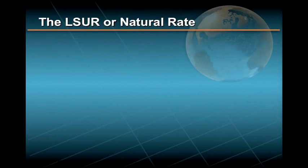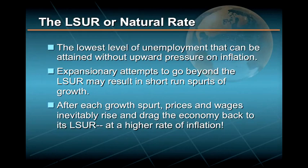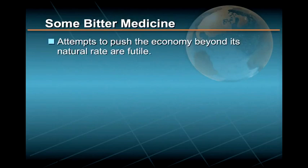This natural rate of unemployment, or LSUR, is the lowest level of unemployment that can be attained without upward pressure on inflation. According to the monetarists, expansionary attempts to go beyond this lowest sustainable unemployment rate may result in short-run spurts of growth. However, after each growth spurt, prices and wages rise and drag the economy back to its LSUR, albeit at a higher rate of inflation. Over time, these futile attempts lead to an upward inflationary spiral.